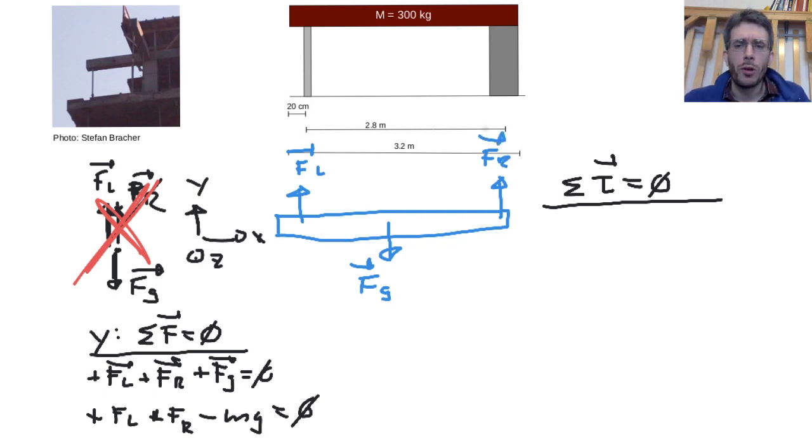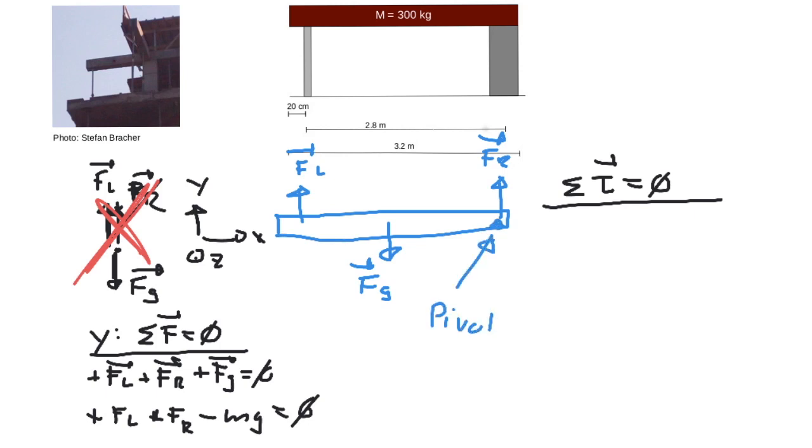Now, as I said before, if the beam is at rest and supposed to remain at rest, then the torque around any point on the beam must be zero. For the pivot point, I can choose this point, this point, this point, I can choose any point. But, as you're interested in the left force, and not in the right force, I'm going to make my life easier. I'm going to put the pivot right here.